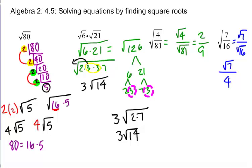That's how you can reduce some of your simpler radicals. Look for pairs — every pair of numbers you find, you pull out. Numbers that don't have pairs, you leave inside. Pairs go out, singles stay in.